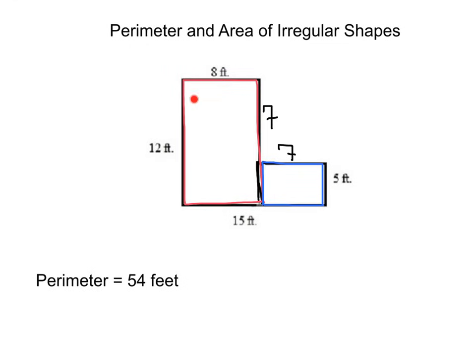This red rectangle has a length of 12 and a width of 8. That's going to give me an area of 96. Our blue rectangle has a length of 7 and a width of 5. That's going to give an area of 35. Adding those areas together, 96 plus 35, we get an overall area of 131 square feet.